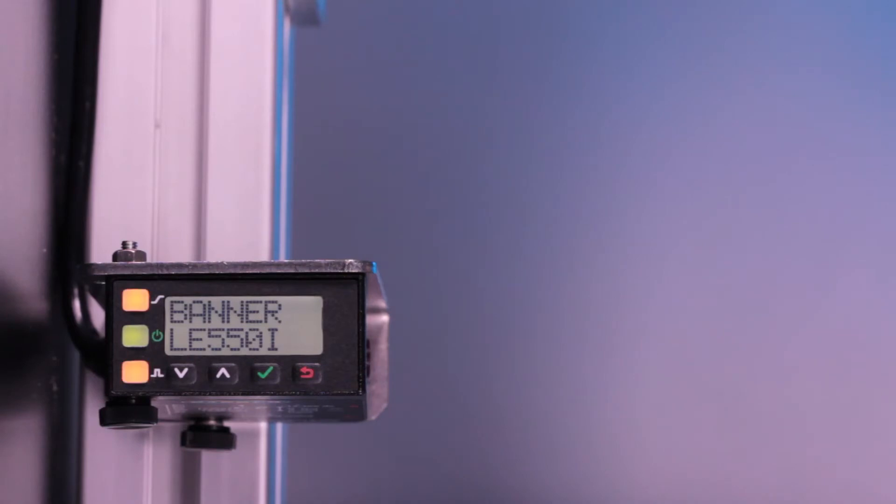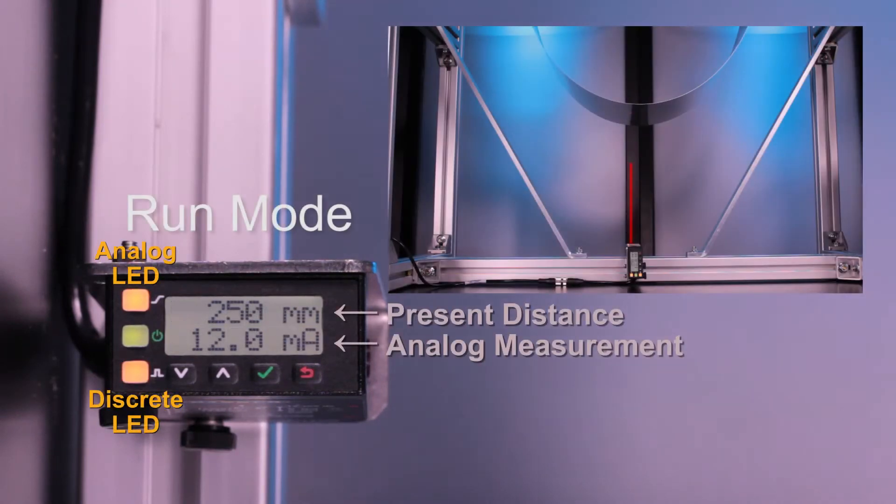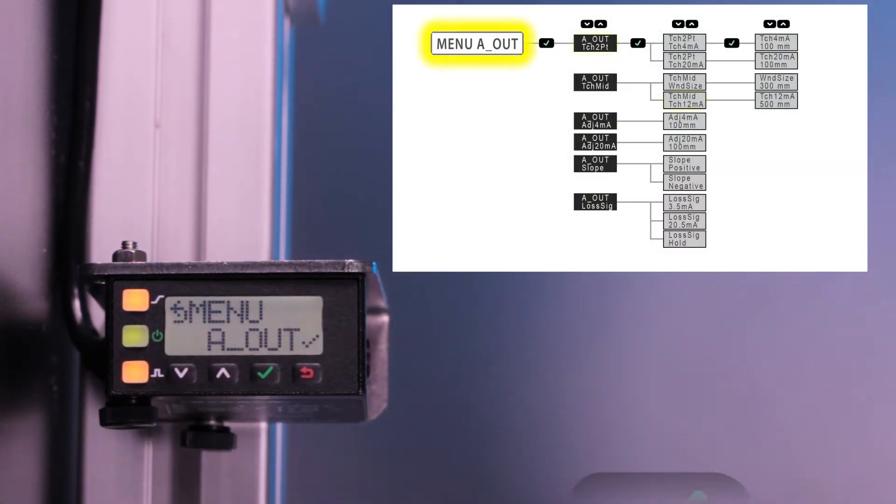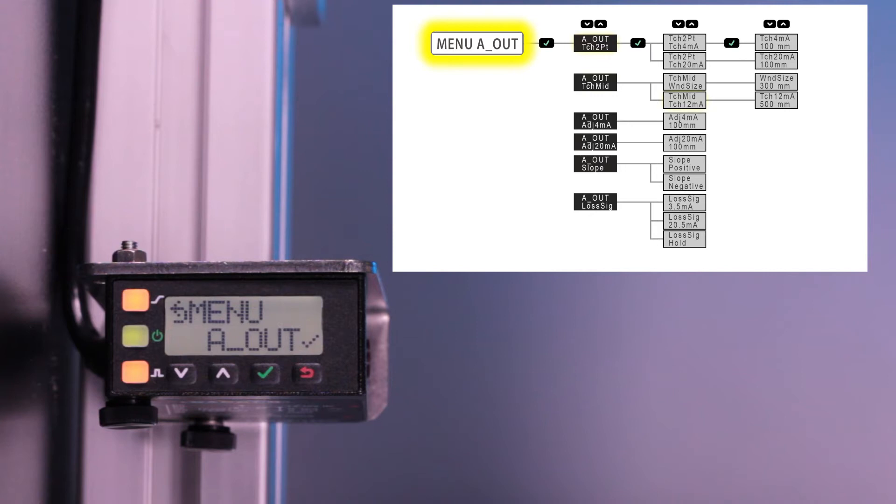When first powered on, the LE begins in run mode, displaying the present distance and analog measurement. To access the midpoint teach option, click the enter button to access the sensor menu.